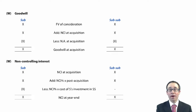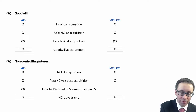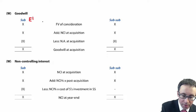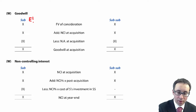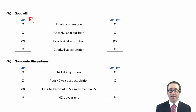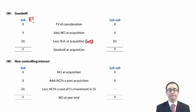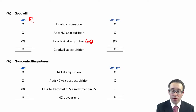Multiply down the spine — nice and simple. Over the page in the notes, thinking about the workings: goodwill is working three, NCI is working four. There isn't much difference at all with the goodwill in the sub. You take your fair value of consideration, add on the NCI at acquisition — whether fair value or proportionate share of net assets — and then deduct the net assets at acquisition, which tend to come from working number two. Nothing difficult at all.